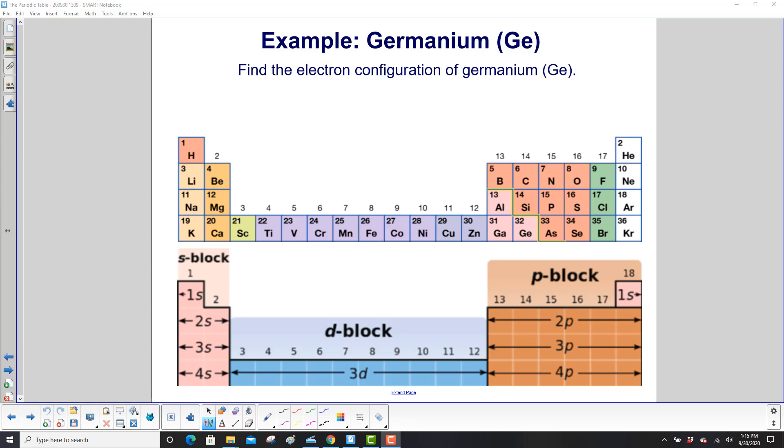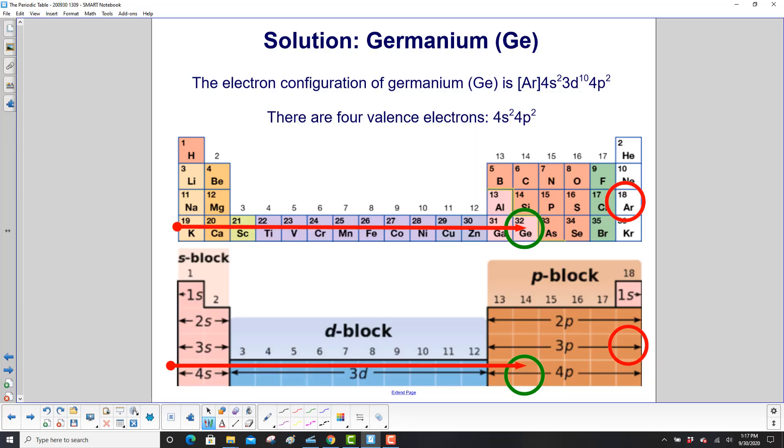Let's try another example. Find the electron configuration of germanium. We start with the noble gas in the period above germanium, and that would be argon right over here. So we put that in brackets, Ar.